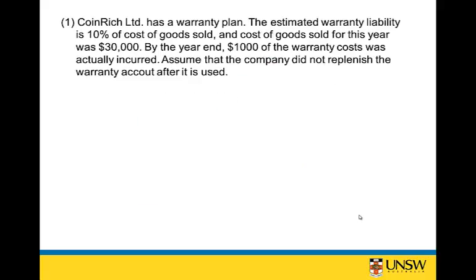This past exam question has Coin Rich Limited, who offers a warranty plan on their products. The estimated warranty liability for the period is 10% of cost of goods sold, and cost of goods sold for the period was $30,000. By the end of the year, $1,000 of warranty costs was actually incurred, and we are to assume that the company did not replenish the warranty account after drawing down. Warranty costs actually incurred means a customer has come and, under the warranty, received cash in exchange for the faulty goods.